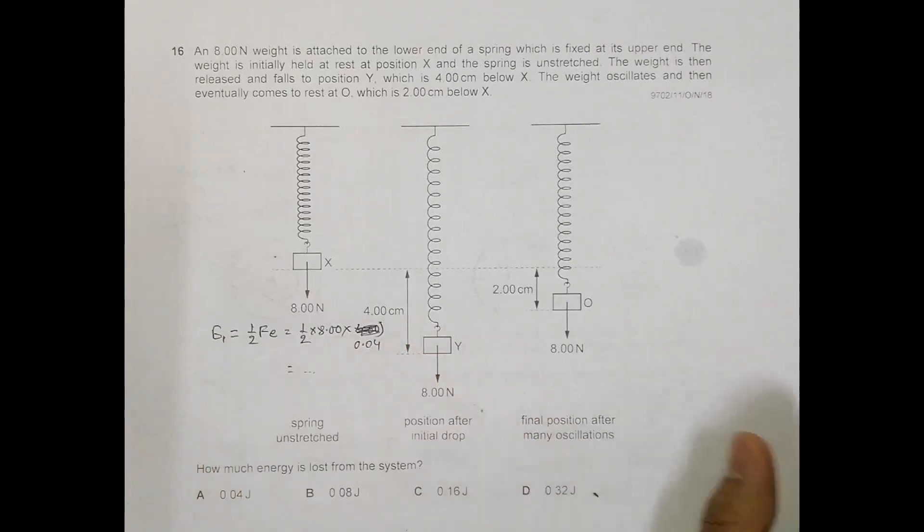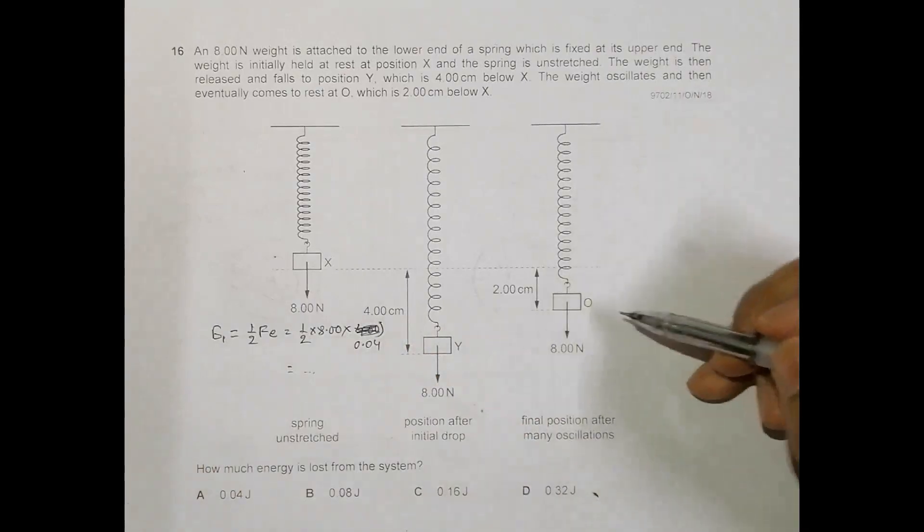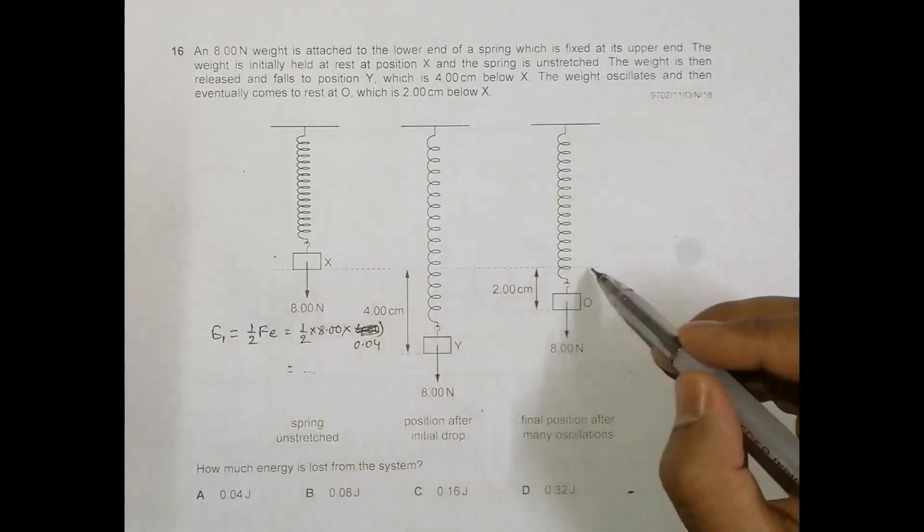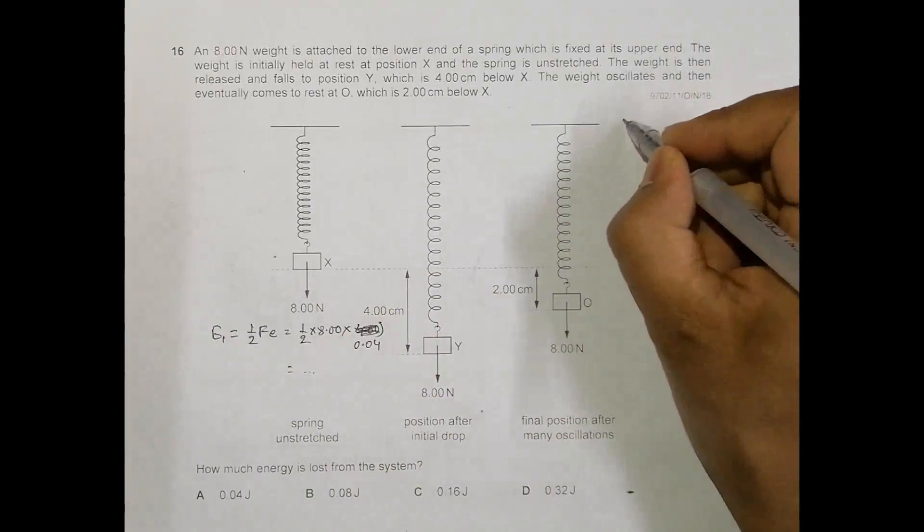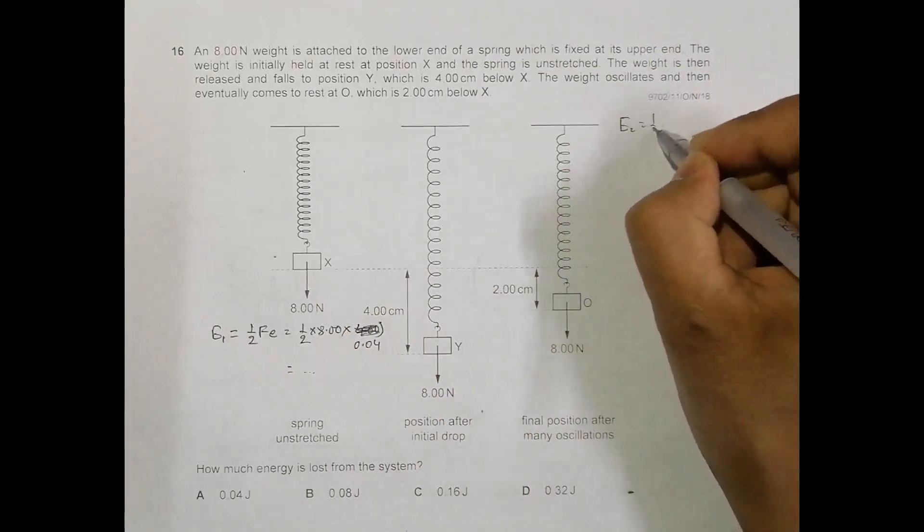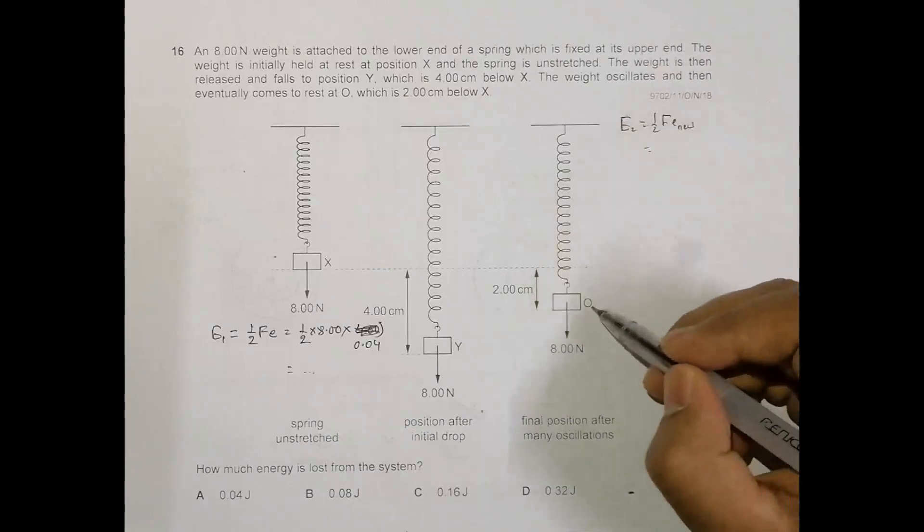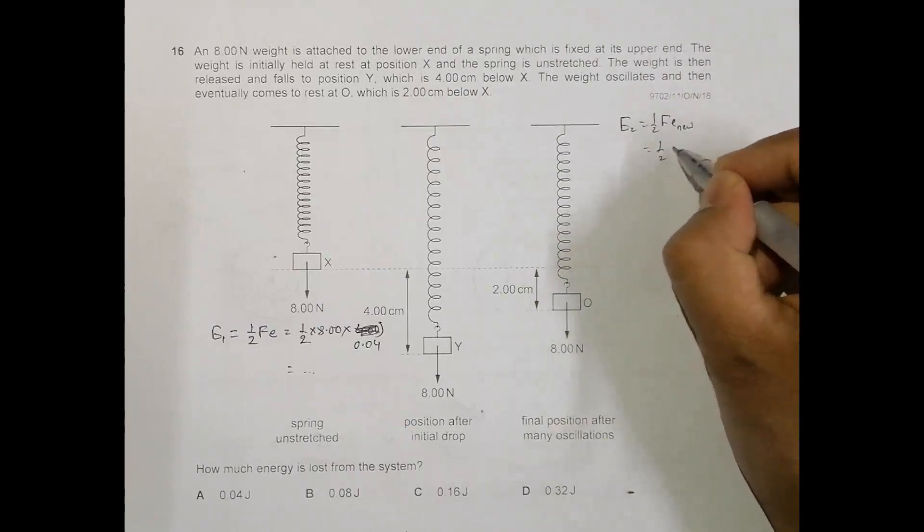Then when it is at this position, the energy stored in it should be equal to E2. E2 equals 1/2 F times the new extension. When it is at O, the extension equals 1/2 times 8.00 times the extension here, which is 0.02 meters.